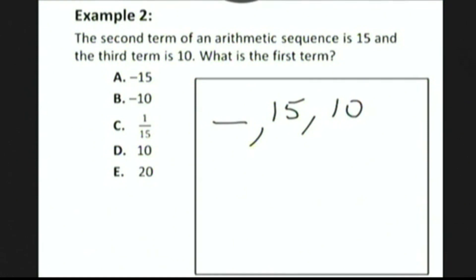Well, we could just count backwards along the sequence. To get from 10 to 15, we have to add 5. So we're going to add another 5 to get that the first term is 20, which is choice E.